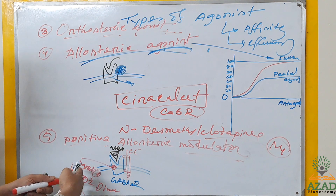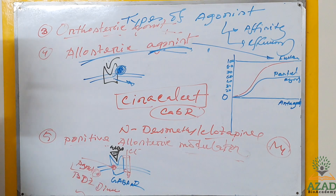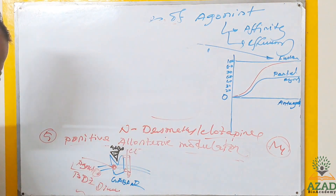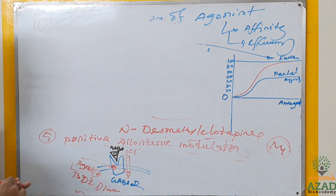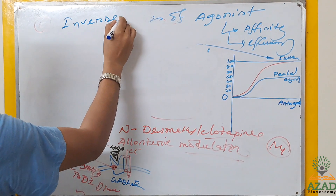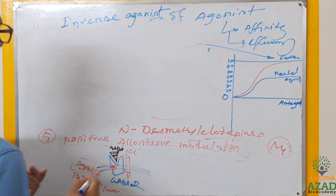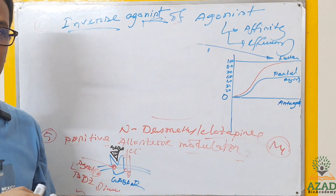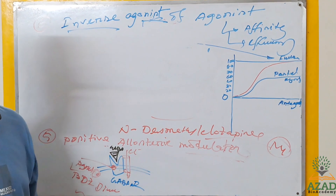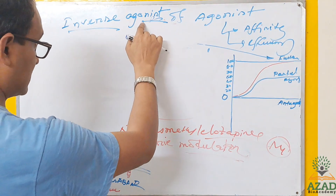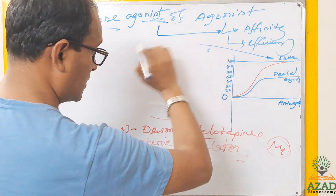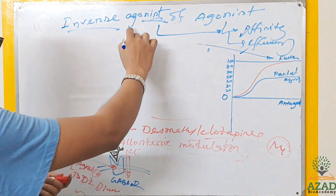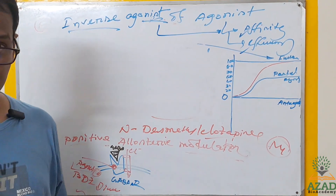The sixth type is inverse agonist, also called reverse agonist. Inverse means opposite. It is an agonist, but its activity is opposite. An inverse agonist must have affinity and efficacy — ability to bind and change receptor function — but the function produced is opposite to the normal agonist effect.